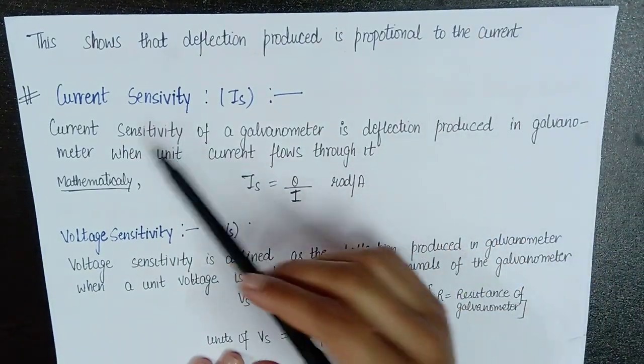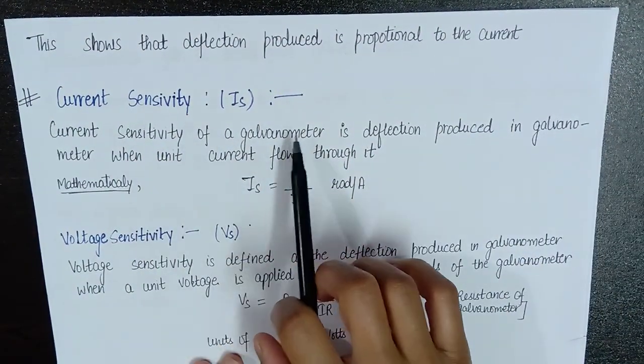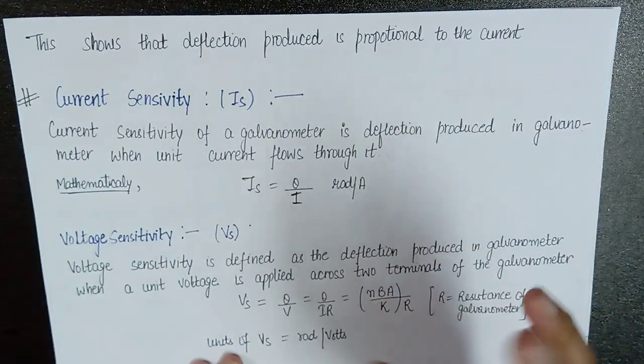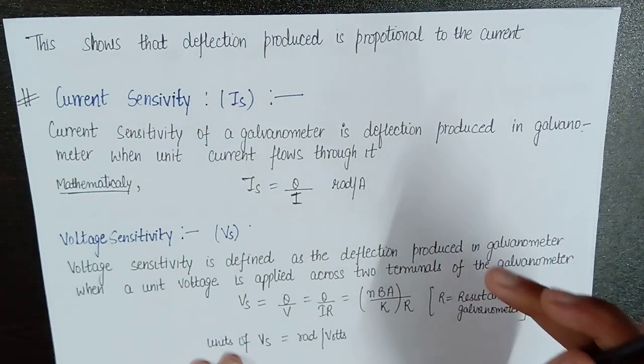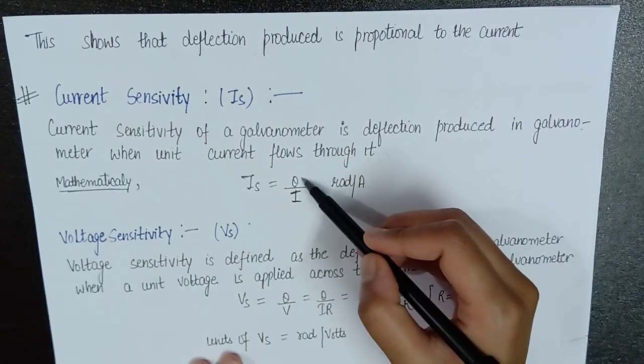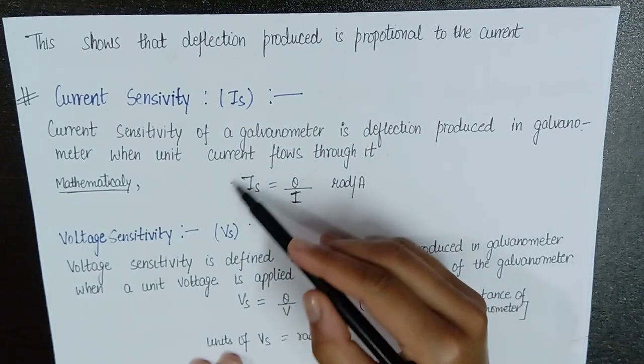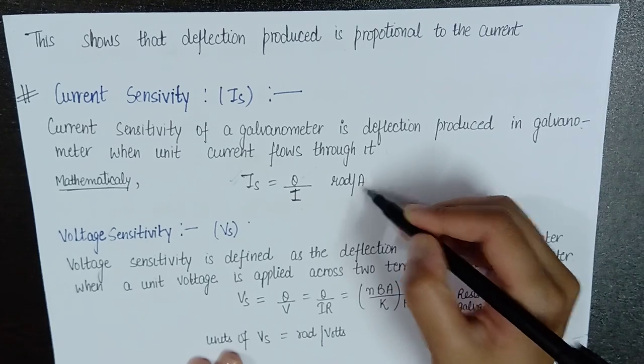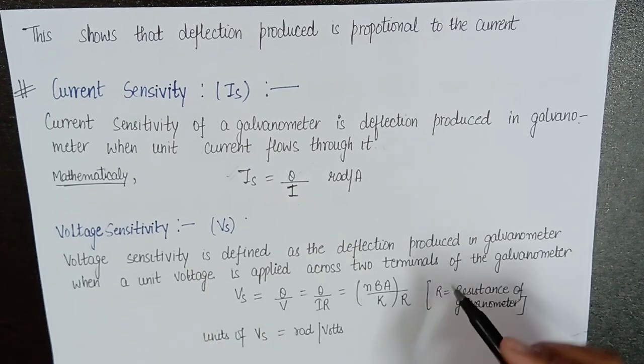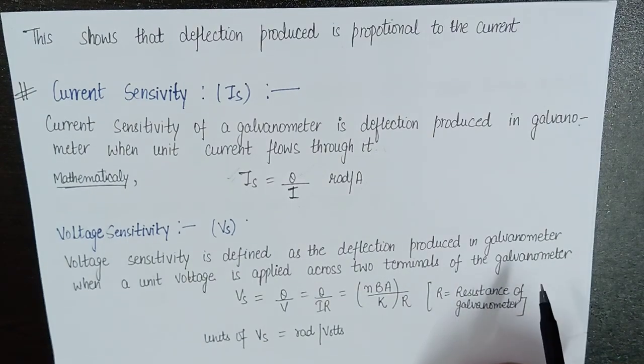So, when we use the current sensitivity and voltage sensitivity, current sensitivity of galvanometer is the deflection produced in the galvanometer when unit current flows through it. When a voltage is supplied across the two terminals of the galvanometer, it is defined as the deflection produced in galvanometer when a unit voltage is supplied across the two terminals of the galvanometer.